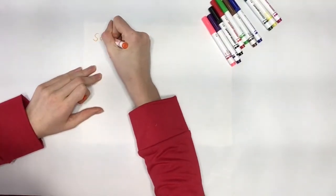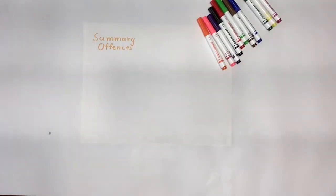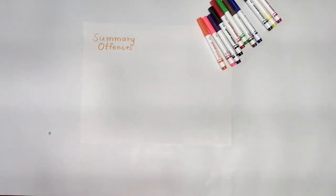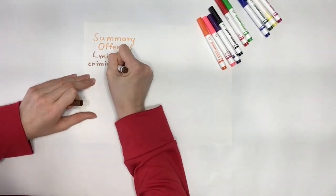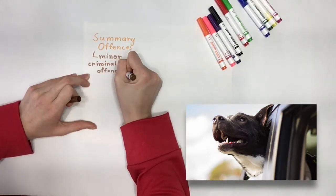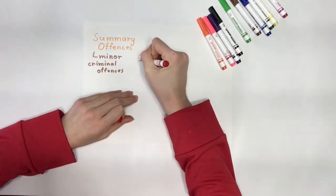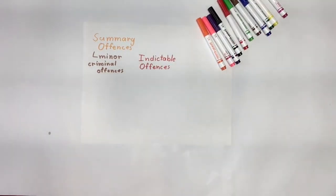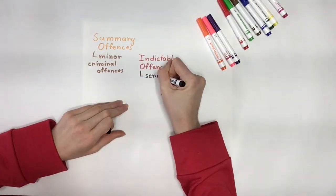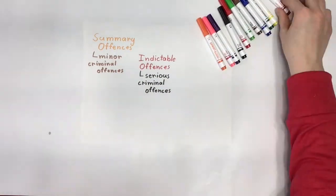There are three categories of criminal offenses in Canada. They are summary offenses, indictable offenses, and hybrid offenses. Summary offenses are minor criminal offenses and most often result in a fine, but sometimes result in up to two years in prison. A summary offense could be creating a public disturbance or driving another person's car without their permission. Indictable offenses are far more serious and usually result in imprisonment, ranging from a two-year sentence to life imprisonment. Examples include murder, theft over $5,000, and arson.